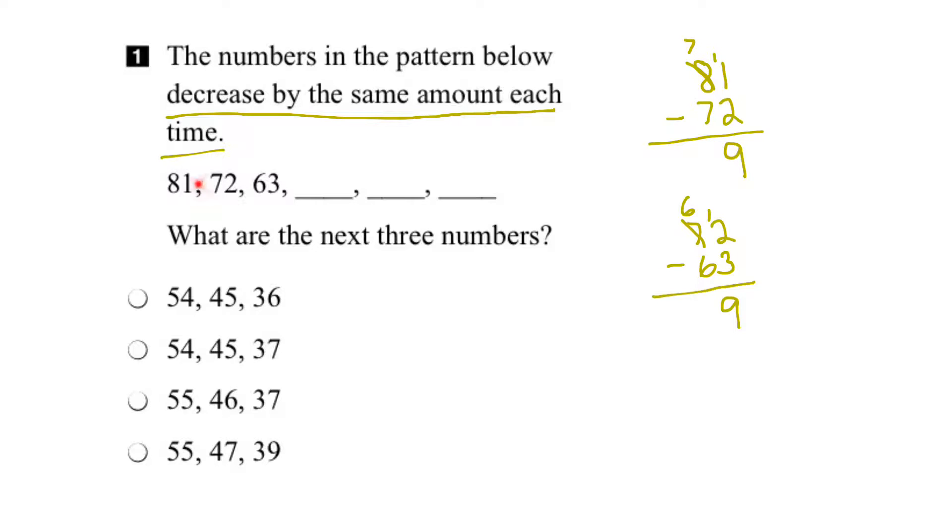So the pattern is, take the number, subtract 9 to get the next number. Subtract 9 to get this number. So what I've got to do is take 63 here, subtract 9, and that should give me the next number.